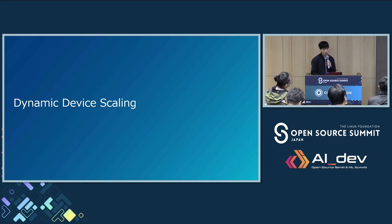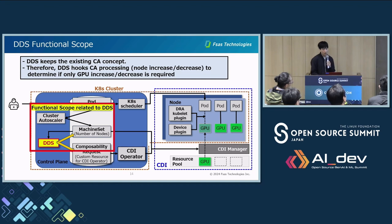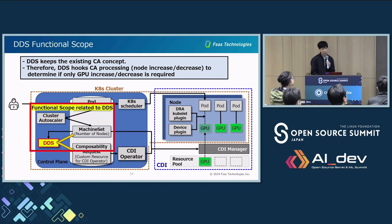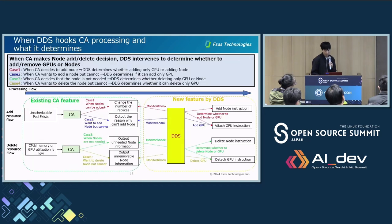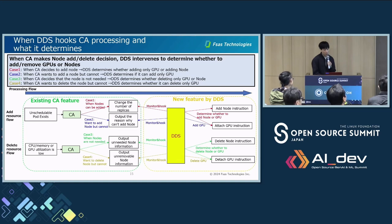Next, I explain the DDS feature — Dynamic Device Steering. DDS keeps the existing CA concept. Therefore, DDS hooks into CA processing such as node increase, and then determines whether only GPU should be added or a node should be added. The functional scope related to DDS is shown in the red block. This slide shows how to hook CA processing. When CA makes a node add or remove decision, DDS intervenes to determine whether to add or remove GPUs or nodes. DDS hooks the following four cases.